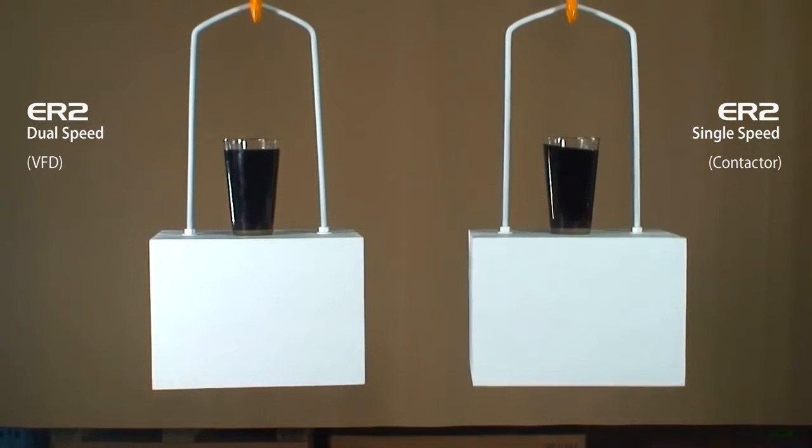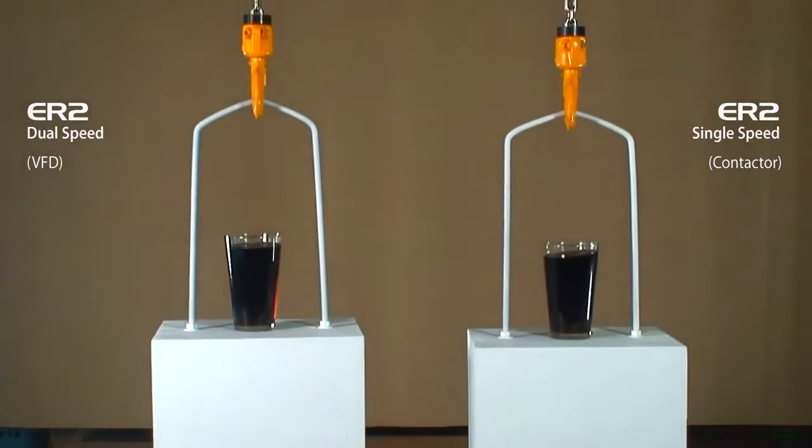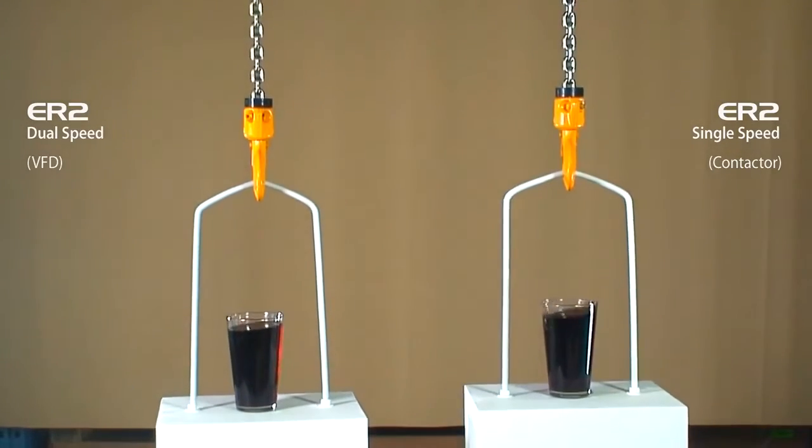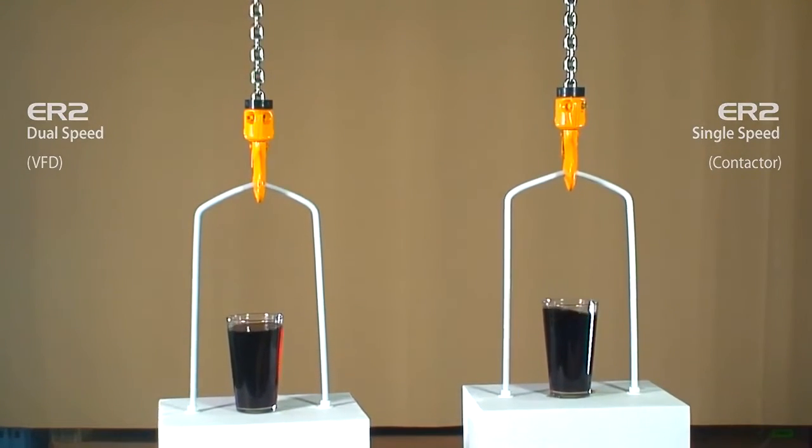The contactor driven hoist engages and disengages the brake more abruptly, which may introduce a bit of swing or bounce on the load.